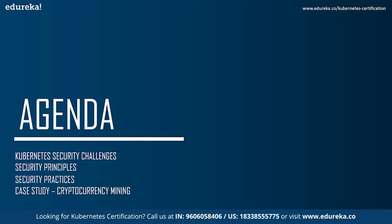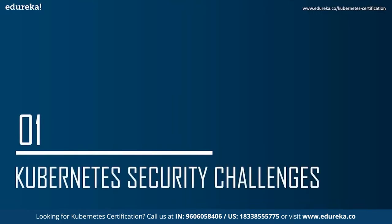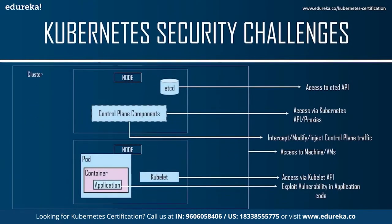Kubernetes security challenges: you can use plenty of non-Kubernetes-specific security tools such as traditional network firewalls and intrusion detection systems, but air-gapped deployments exist, and wherever humans interact with your system they may constitute a risk — either maliciously or due to human error. The diagram on screen shows vulnerabilities including easy access to the etcd API and access via the Kubernetes API or proxies.